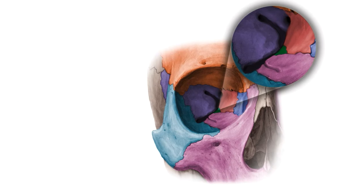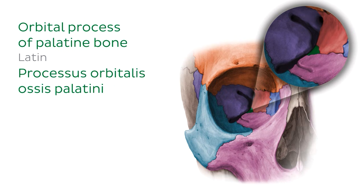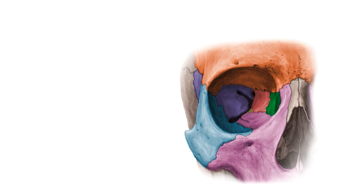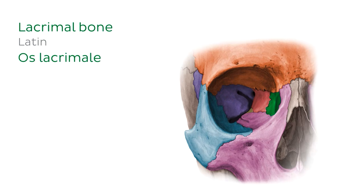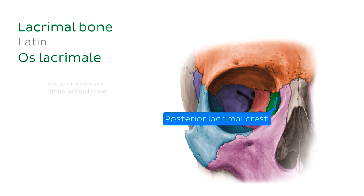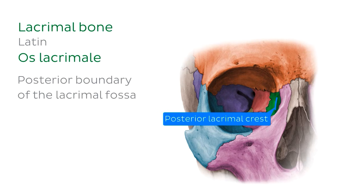Slightly inferior to the orbital plate of the ethmoid bone, you'll see another small piece of bone found in the posterior orbit — the orbital process of the palatine bone. This is the most superior part of the vertical part of the palatine bone, bordered superiorly by the ethmoid bone, inferiorly by the orbital surface of the maxilla, and posteriorly by the inferior orbital fissure. That brings us to our final bone of this tutorial, the lacrimal bone — a paired or bilateral bone which contributes to the medial wall of the orbit. Its orbital surface is relatively small and roughly rectangular in shape, and it presents one major landmark: the posterior lacrimal crest, which forms the posterior boundary of the lacrimal fossa.